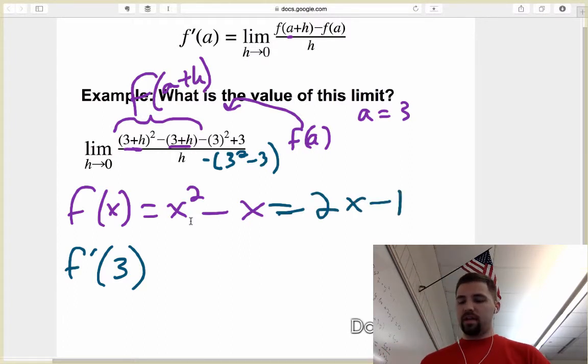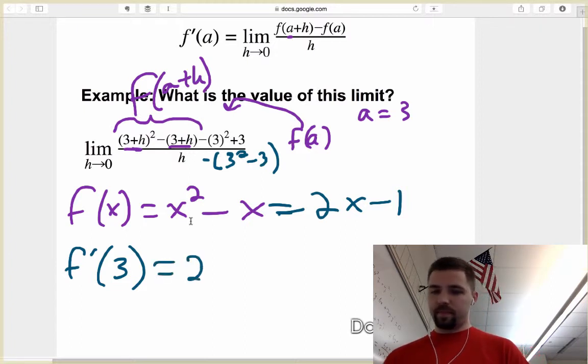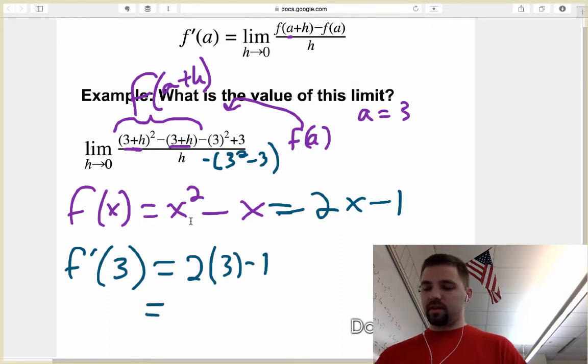And then so f prime of 3 is just simply 2 times 3 minus 1, which is equal to 2 times 3, which is 6 minus 1, is 5.